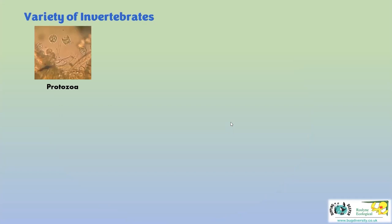There are a lot of different invertebrate groups found in the river. Protozoa are obviously microscopic - you need to get them out and put them under a microscope, together with fungi and algae. They're not strictly invertebrates, but it all gets a little fuzzy down at that end of life as to what's a plant and what's an animal.